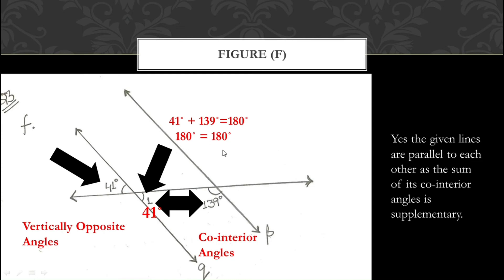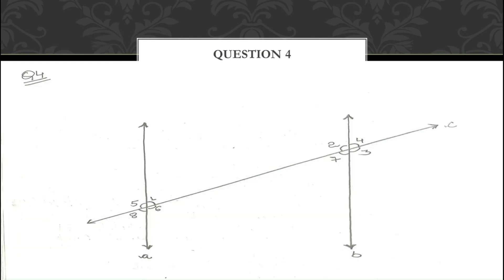I have explained question numbers 1, 2, and 3. Now it is time to move on to question number 4. This is the figure of question number 4. Here one particular angle measurement is given — angle 1 = 45°. Using angle 1, we need to find the measurements of all other angles: angle 2, 3, 4, 5, 6, 7, and 8.